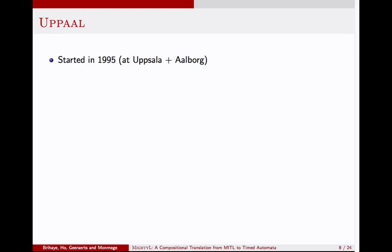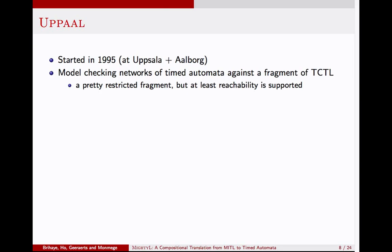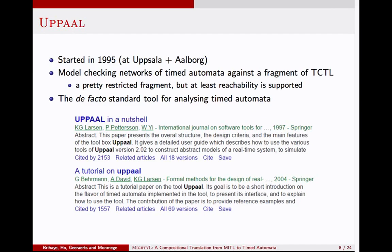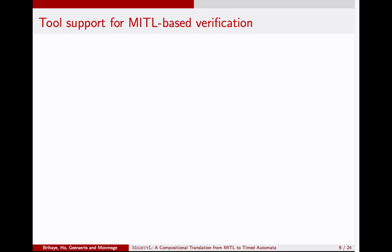Now we can have a look at what can be done in practice. This tool, UPPAAL, was first started in 1995 by people at Uppsala and Aalborg universities. It can do model checking of networks of timed automata, so you can model your system in components, and it can model check this against a fragment of formulas in TCTL, which is the timed version of the branching time logic CTL. It only supports a rather restrictive fragment of TCTL, but at least reachability is supported, so we can check timed automata reachability. These days, UPPAAL is the most popular tool for analysis of timed automata. You can see these citation numbers are pretty high.